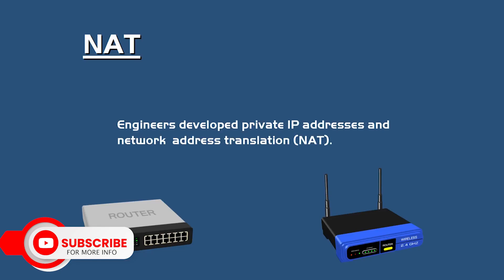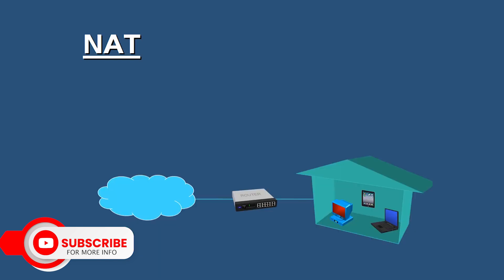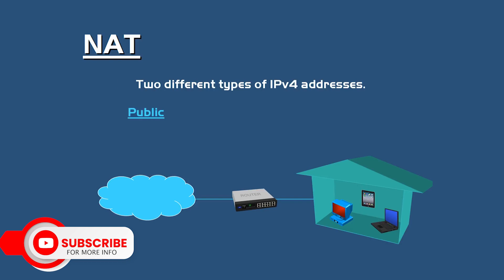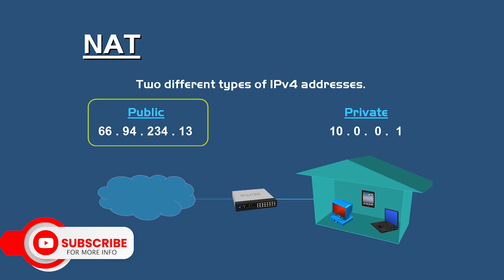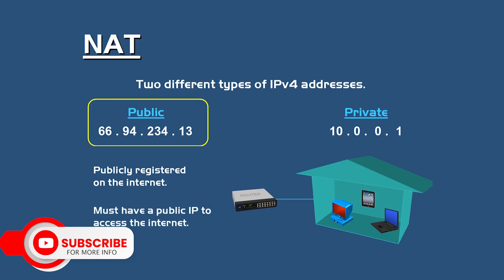Number six, network address translation, or NAT. NAT is a technique used in routers where multiple devices on a local network share a single public IP address. Outbound traffic appears to come from the router, hiding the individual device's IP address.